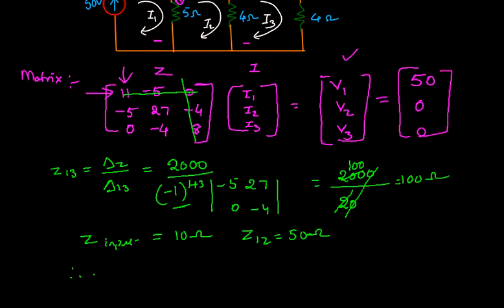If you want to find out the currents, i1 is equals to V by delta input. That is z input, that is equals to 50 by z input is 10, so that is equals to 5 amperes.